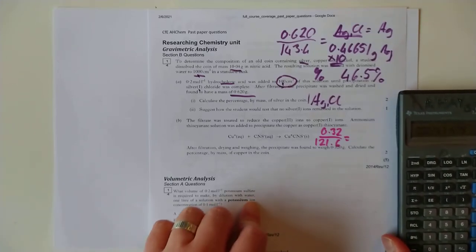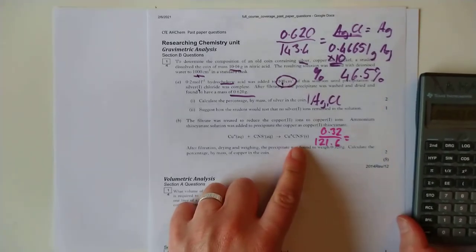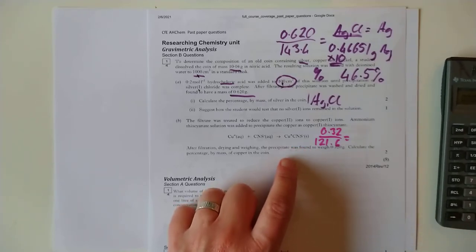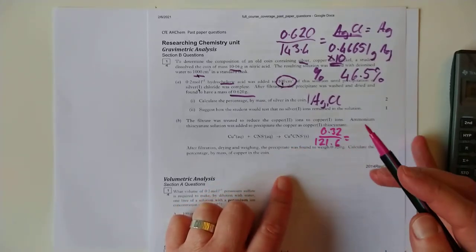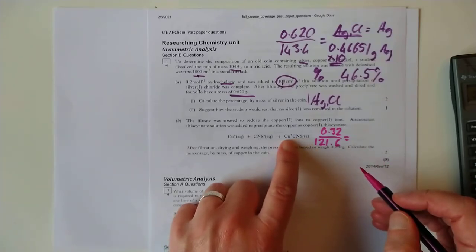that number of moles of the precipitate. So 0.00260. I'm just going to keep that on the calculator. That's the moles of the copper-thiocyanate precipitate.